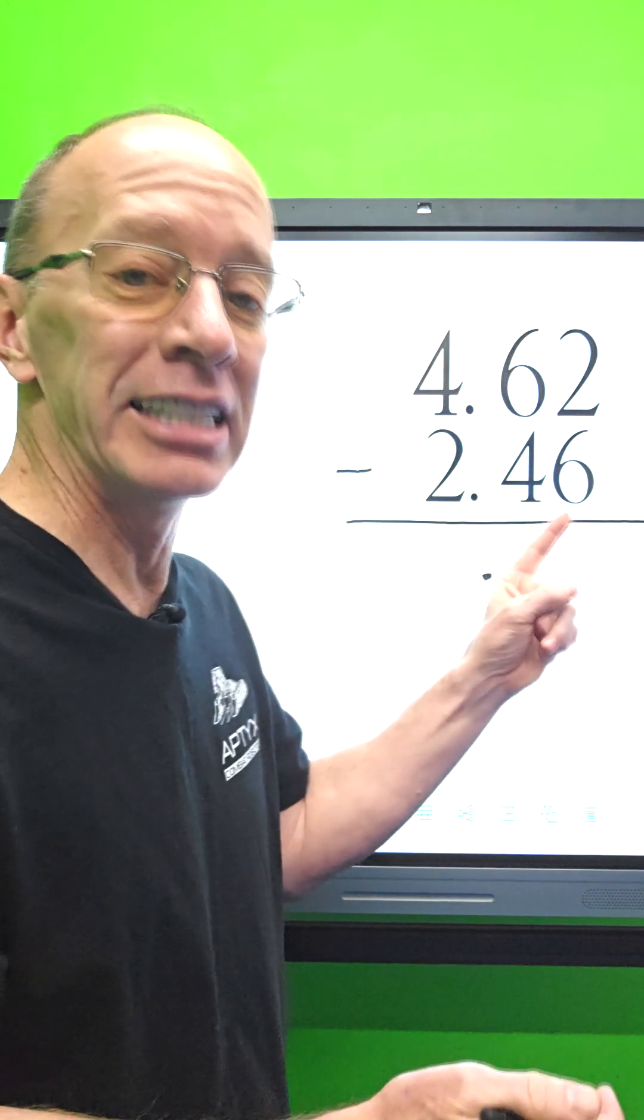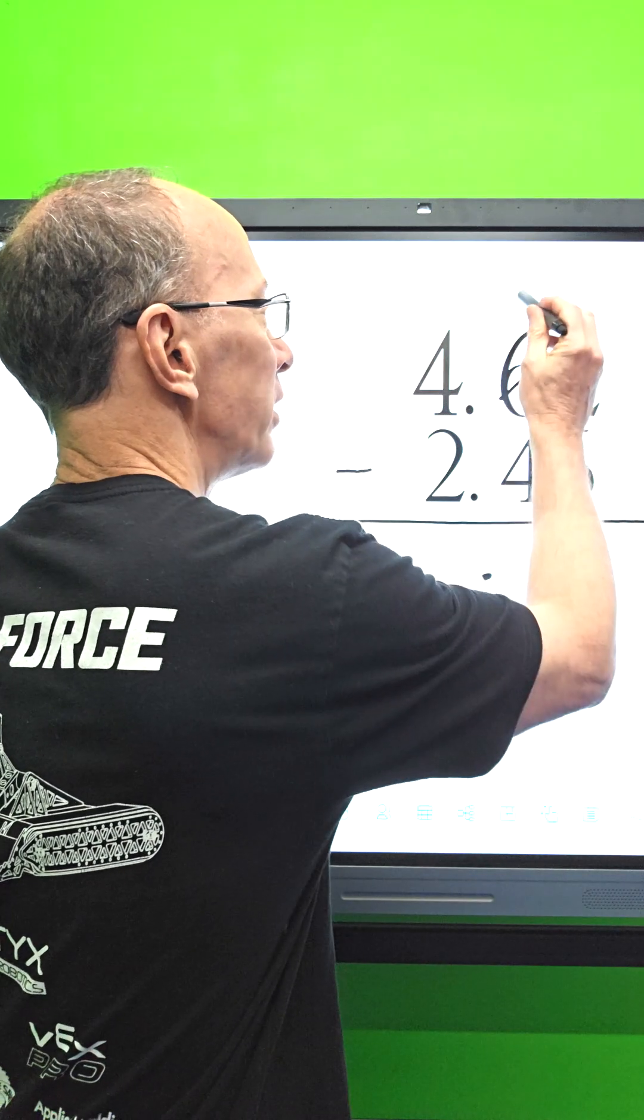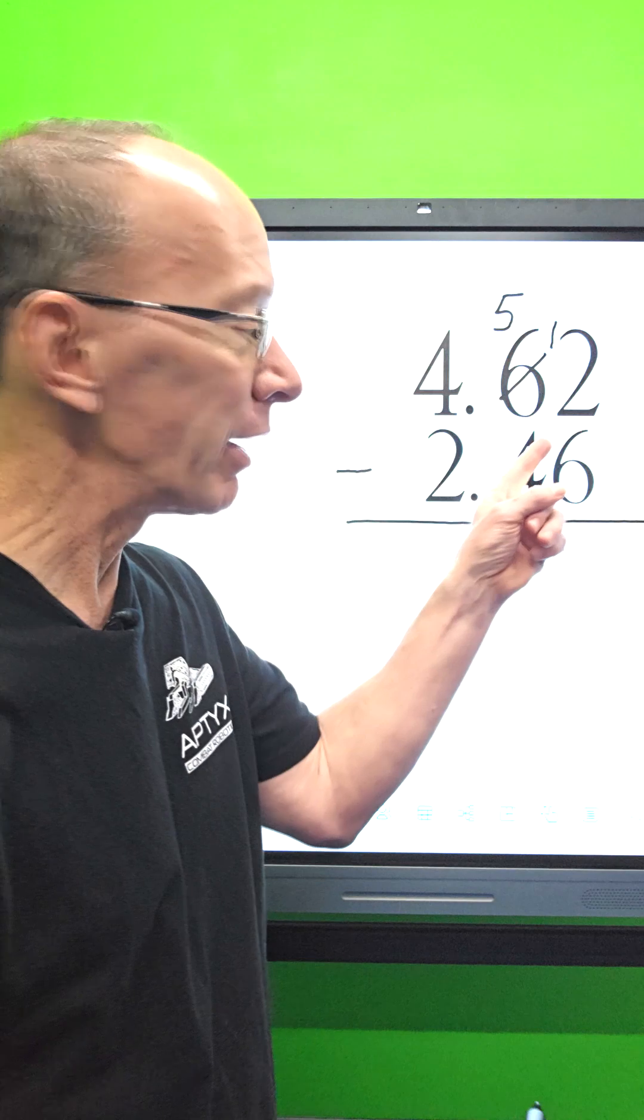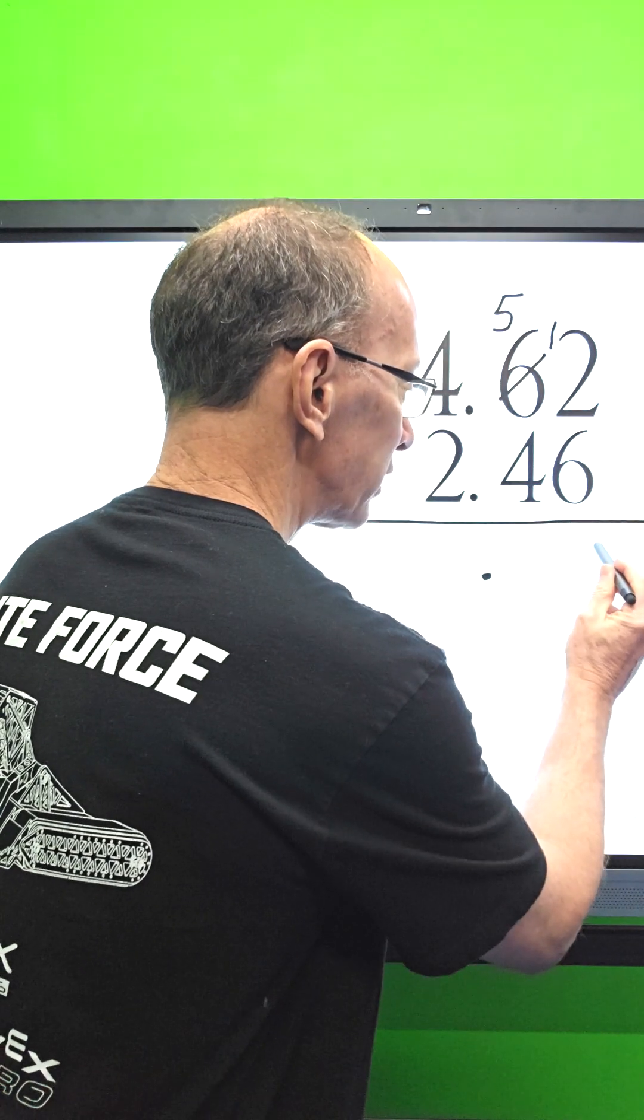So I cross off the six, that will be a five, and now I'm adding that ten to the two which would be twelve. Now I can do it. Twelve minus six, what is it? Six. So I go ahead and put the six right here.